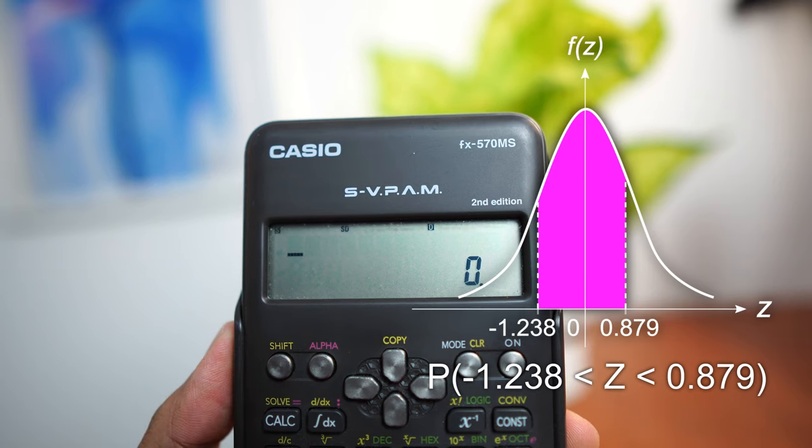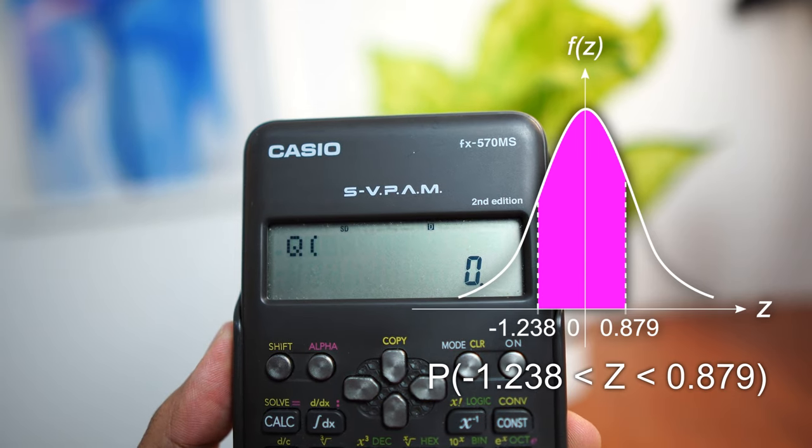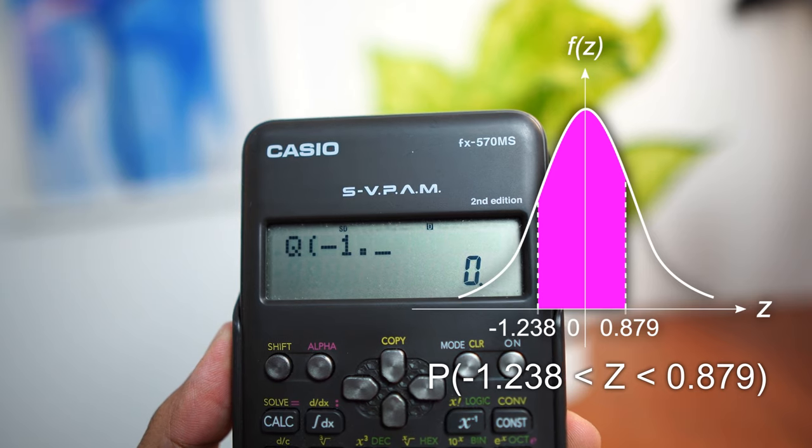There is another way that we can do this and that is, you can straight away choose the values from the y-axis to the Z-score on both sides. That would mean, we would choose, go to 3, go to 2, choose Q,